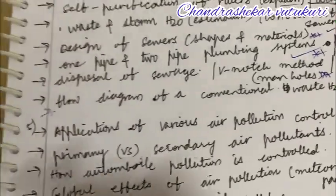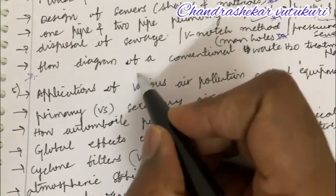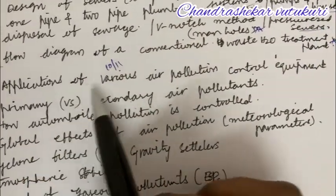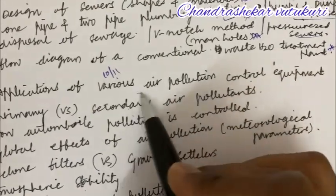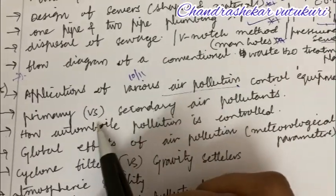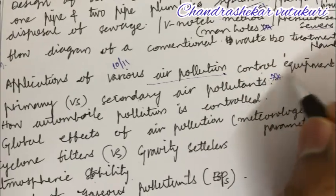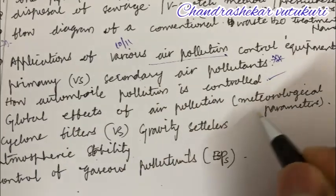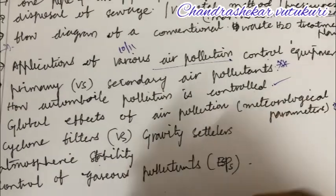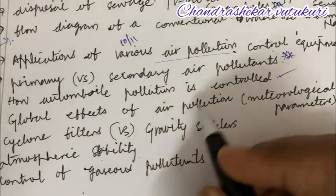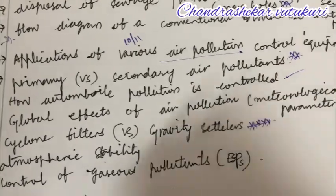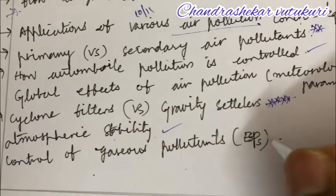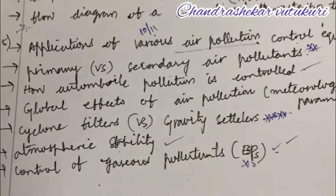Moving to Unit 5 — covering question numbers 10 and 11, with short questions also from this unit. Applications of various air pollution control equipment, and define the term 'air pollution' may be the short question. Primary versus secondary air pollutants. How automobile pollutants are controlled is a short question. Global effects of air pollution and meteorological parameters is said to be the topmost question. Cyclone filters and gravity settlers may occur in the 11th question. Atmospheric stability and the control of gaseous pollutants and ESPs is also an important question.